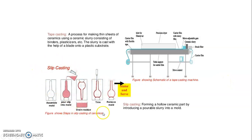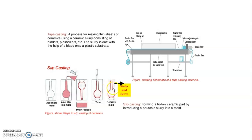In slip casting, an assembled mold is used. We pour the slip into the mold. After draining the excess amount, the trim remains. The trimmer removes the unwanted mold material outside the part. After the trimming process, we get the removed mold final part. That mold part is then put into the sintering and compact process to get the final product of ceramics. This is a pourable slurry introduced into the mold.